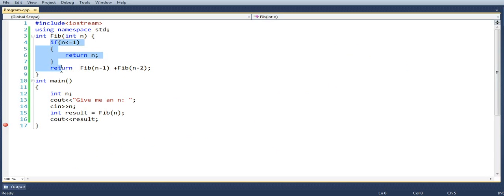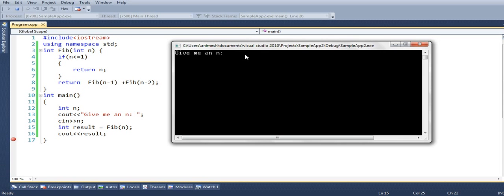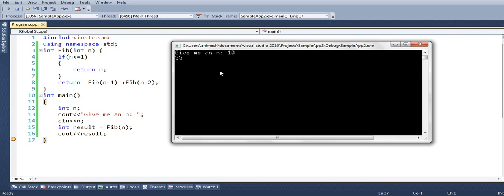And this is the recurrence relation. We asked the user for an n and print the result after calling fib(n). So let's see what happens if we run this program. Let's say we first give n is equal to 10. This gives me the result 55 immediately. And now let's give a slightly higher n, like n is equal to 40.